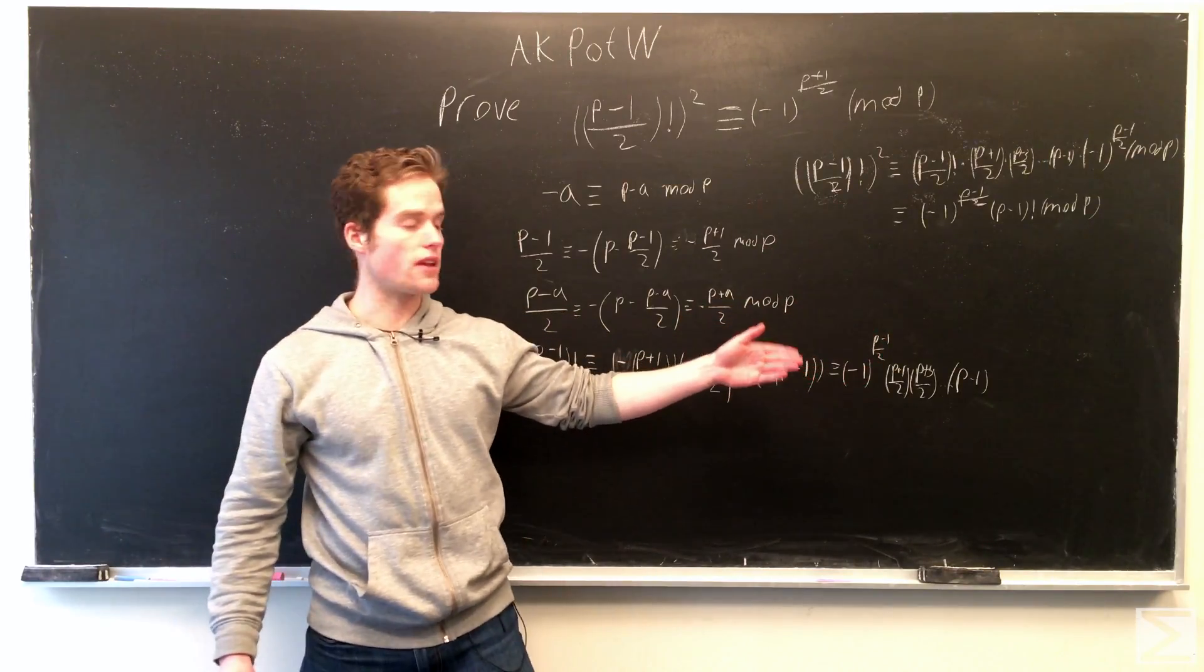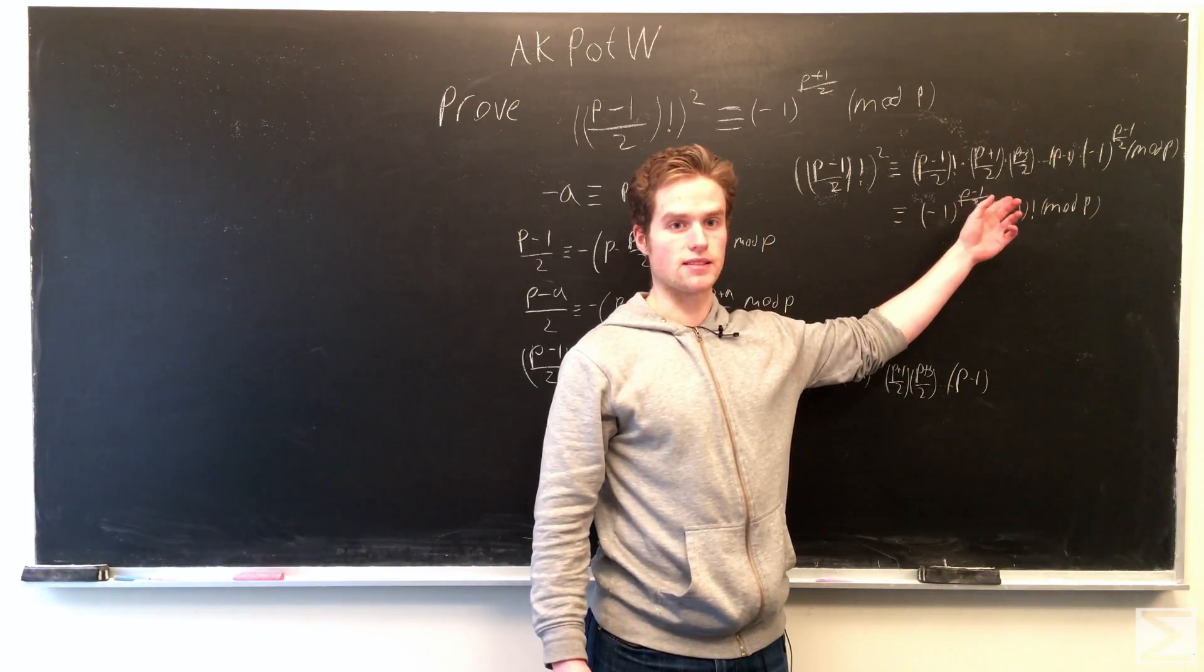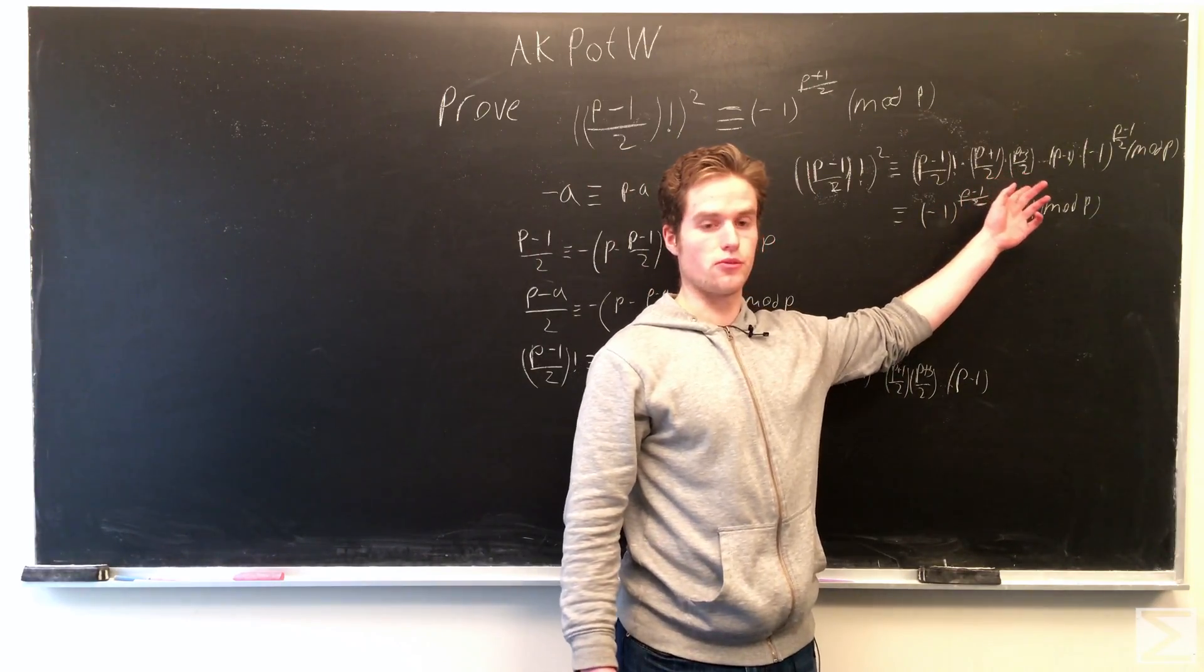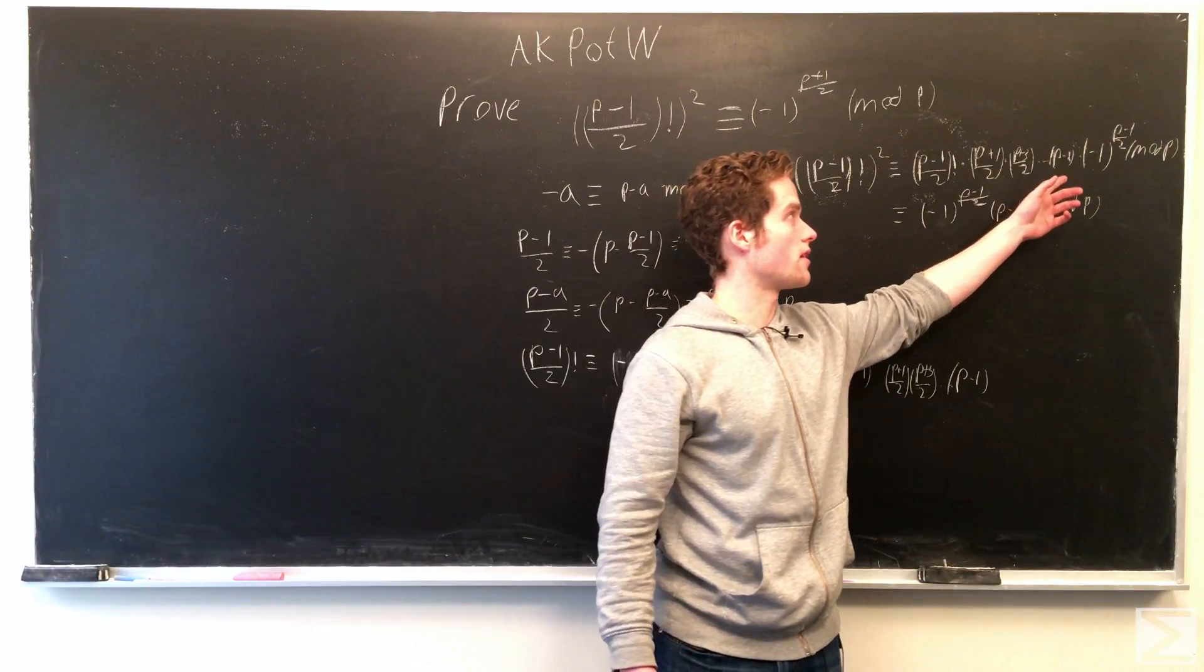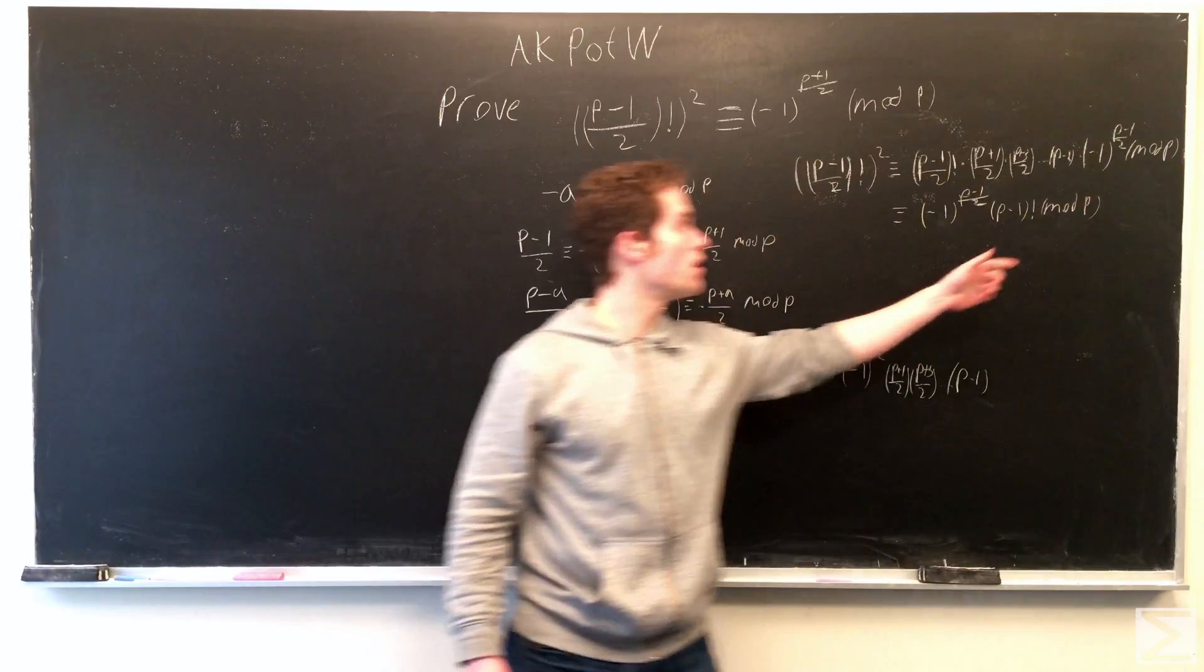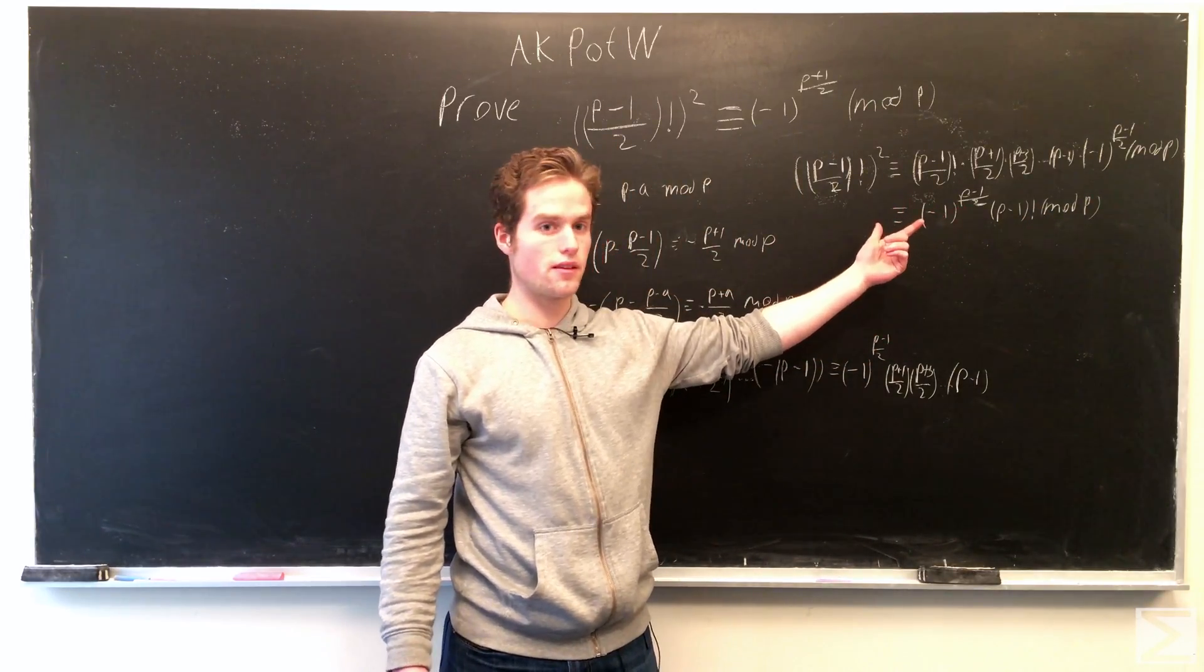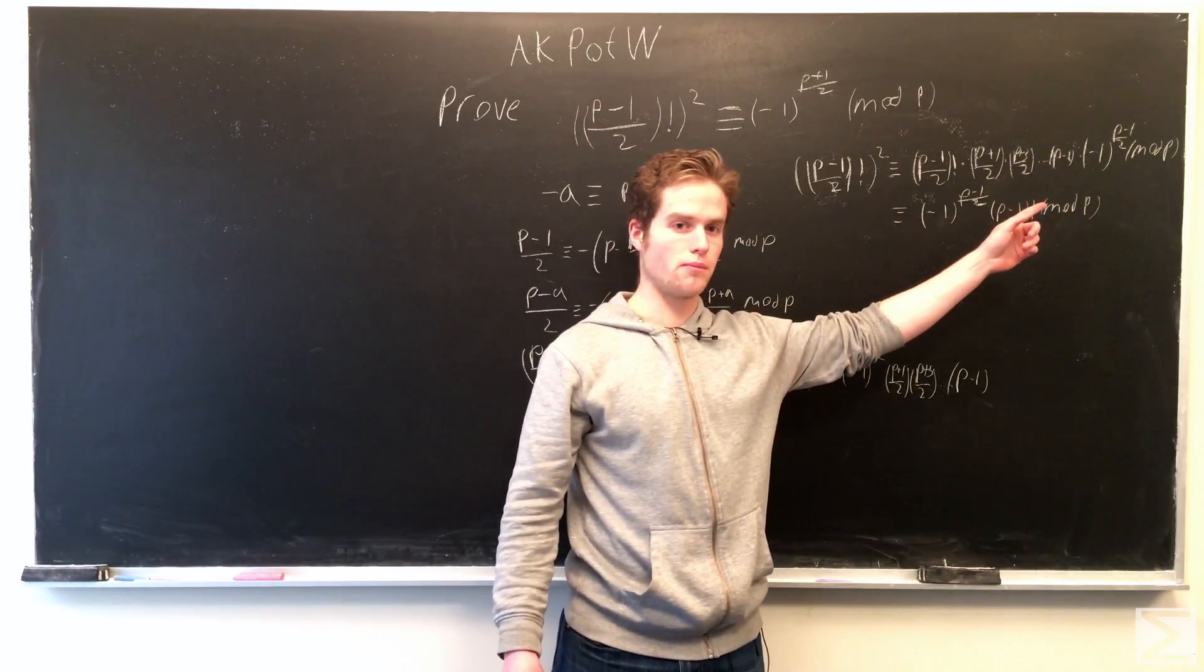And taking one of those (p-1)/2 factorials and writing it in this alternate form of (p+1)/2, (p+3)/2, all the way to p-1 times (-1)^((p+1)/2), we can then combine all the terms with p, excluding (-1)^((p-1)/2).